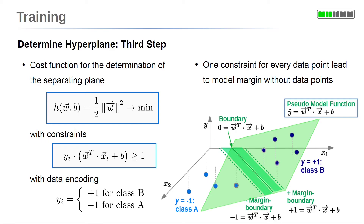This is our final optimization problem. The cost function h equals one-half times the parameter vector w squared, which maximizes the margin width. The constraints, one for each data point, restrict the margin so that it stays free of data points. Solving this constrained optimization determines the parameters and therefore the boundary.